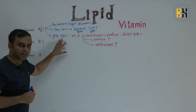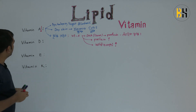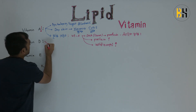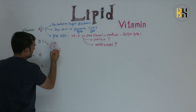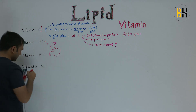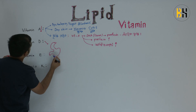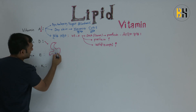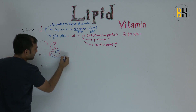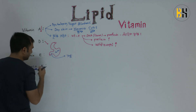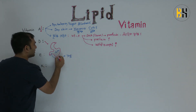Here we go through vitamin D. The role of vitamin D is related to calcium. When we eat calcium, we eat vitamin D, and we keep the calcium in the body.